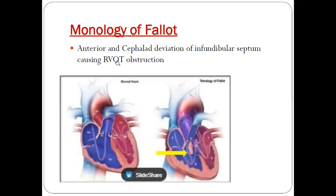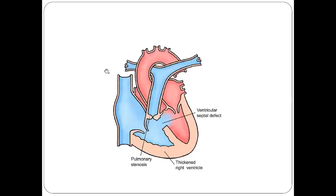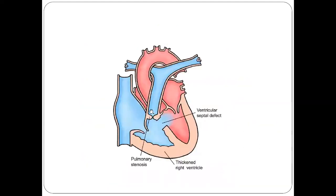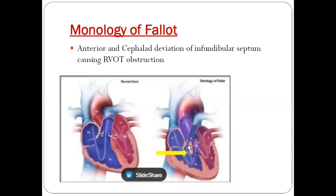What is monology of Fallot? Monology of Fallot is nothing but the basic principle because of which tetralogy of Fallot occurs. The main pathophysiology is the anterior and cephalad deviation of the infundibular septum, which obstructs the pulmonary artery and leads to pulmonary stenosis. This single pathophysiology is called monology of Fallot.